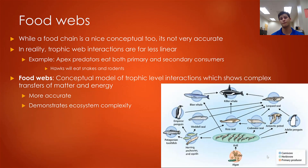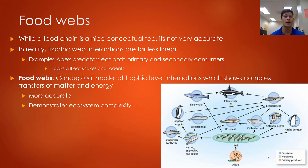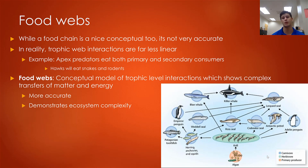Now that we've talked about food chains, it's useful to look at a food web to see how an ecosystem really functions. While a food chain is a nice conceptual tool, it's not very accurate because most interactions in any ecosystem are not linear. Apex predators eat primary and secondary consumers — a hawk will eat a snake, a rodent, and a bug. Food webs are a conceptual model of trophic level interactions which show far more complex relationships and transfers of matter and energy.